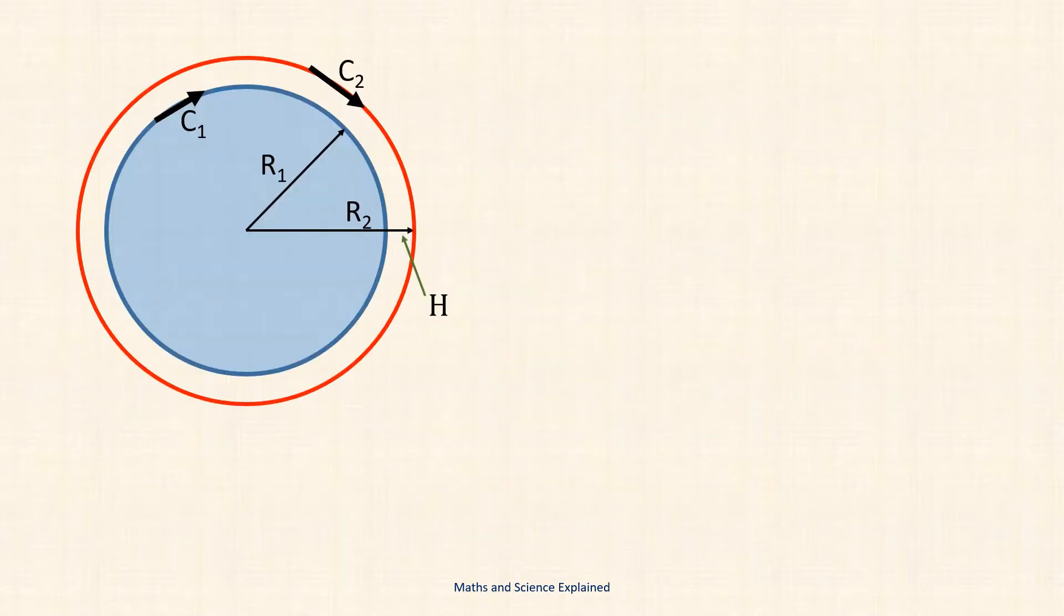Here we have two concentric circles, the inner of which represents the circumference C1 of the earth and the original rope that was wrapped tightly around it. The outer one represents the circumference C2 of the rope when raised 15 centimeters above the ground. The respective radii are R1 and R2 and the height raised is H. Now the difference in the radii R2 minus R1 is clearly the height H or 15 centimeters or 0.15 meters. The difference in the circumferences C2 minus C1 is clearly the extra length of rope required given by L.